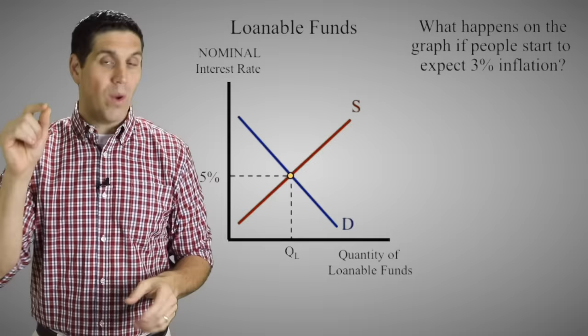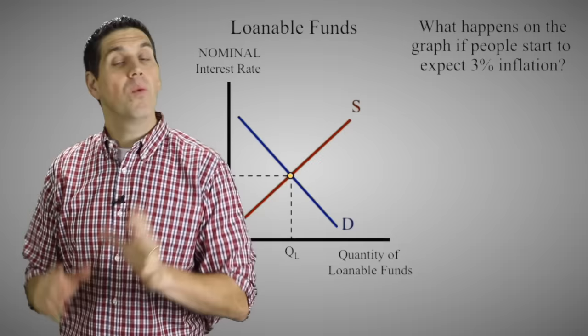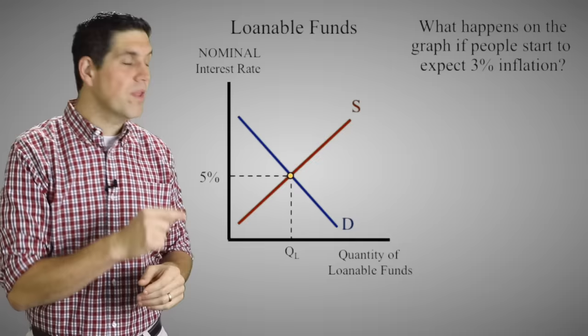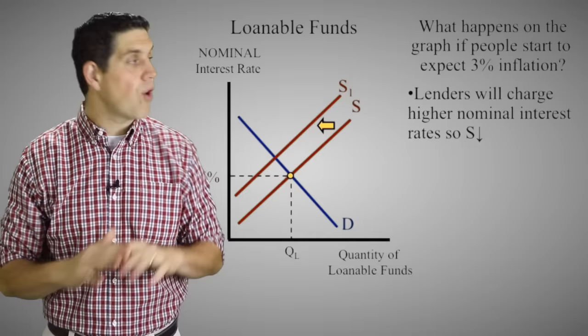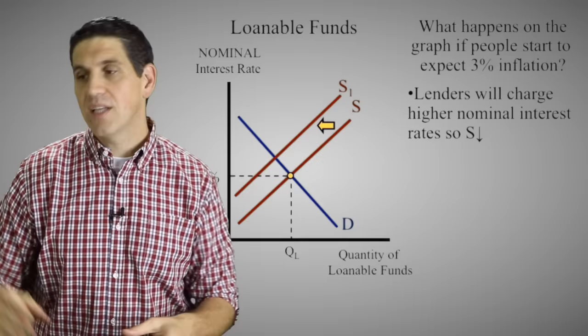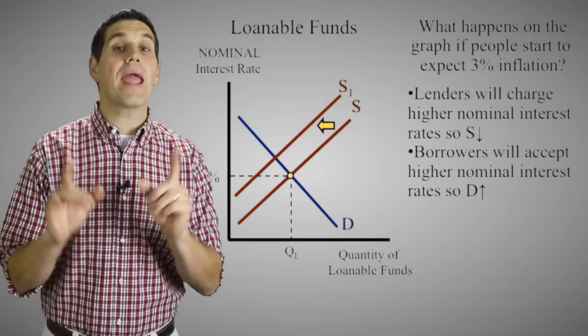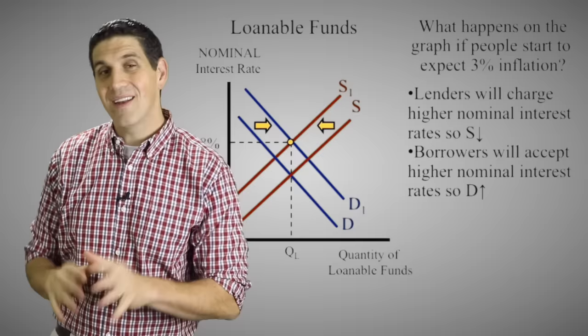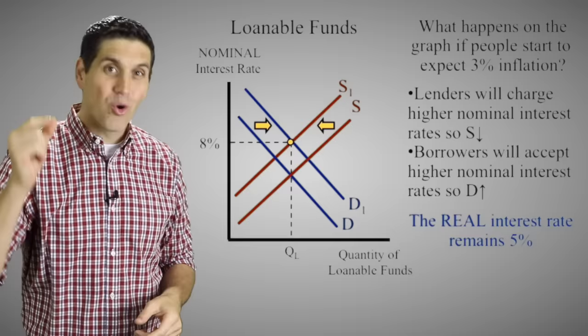Now let's make a change. What's going to happen on this graph if people start to expect 3% inflation? Inflation hurts lenders and helps borrowers, so both supply and demand for loanable funds will change. If everyone thinks there's going to be 3% inflation, lenders will charge 3% higher nominal interest rates across the board to maintain that 5% real interest rate. On the demand side, borrowers will be willing to pay 3% higher interest rates because inflation will make it easier to pay back loans. The new equilibrium nominal interest rate goes up to 8%, but the real interest rate stays exactly the same at 5%.